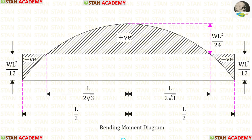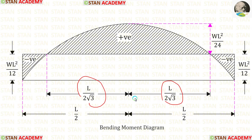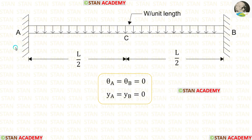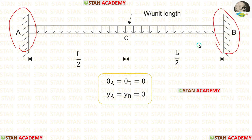Now we can make the bending moment diagram with the distance of points of contraflexure. Both points of contraflexure lie at a distance of L/(2√3) from the center. In this beam, at points A and B there are fixed supports. In the fixed supports there will be no slope, so theta A and theta B will be zero. Also in the fixed supports there will be no deflection.